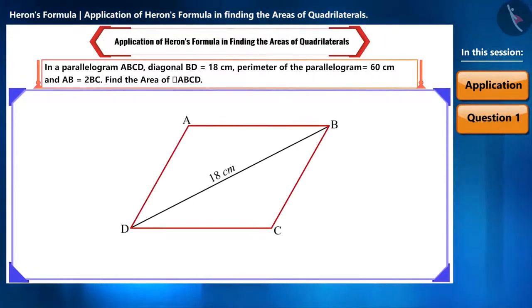Friends, in a parallelogram ABCD, diagonal BD equals 18 cm and the perimeter of ABCD is given to be 60 cm. It's also given that AB is 2 times BC and we have to find the area of parallelogram ABCD.